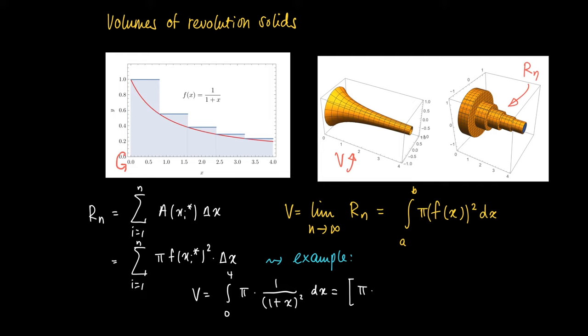We evaluate the integral between the integration boundaries 0 and 4. We find -1/5 π, that's what we get if we substitute 4, minus -π which is the number we get by substituting 0 in this primitive.